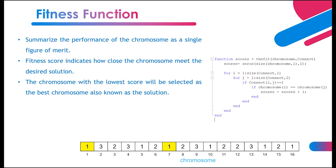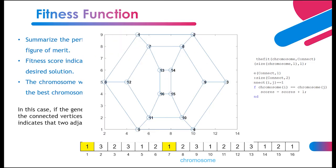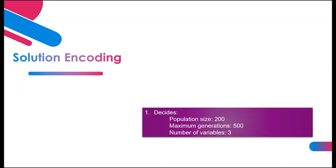Fitness score indicates how close the chromosome meets the desired solution. Hence, the chromosome with the lowest score will be selected as the best chromosome, also known as the solution. In this case, if the gene of the chromosome has the same value with the connected vertices, the fitness score will be increased, indicating that two adjacent vertices are having the same color.